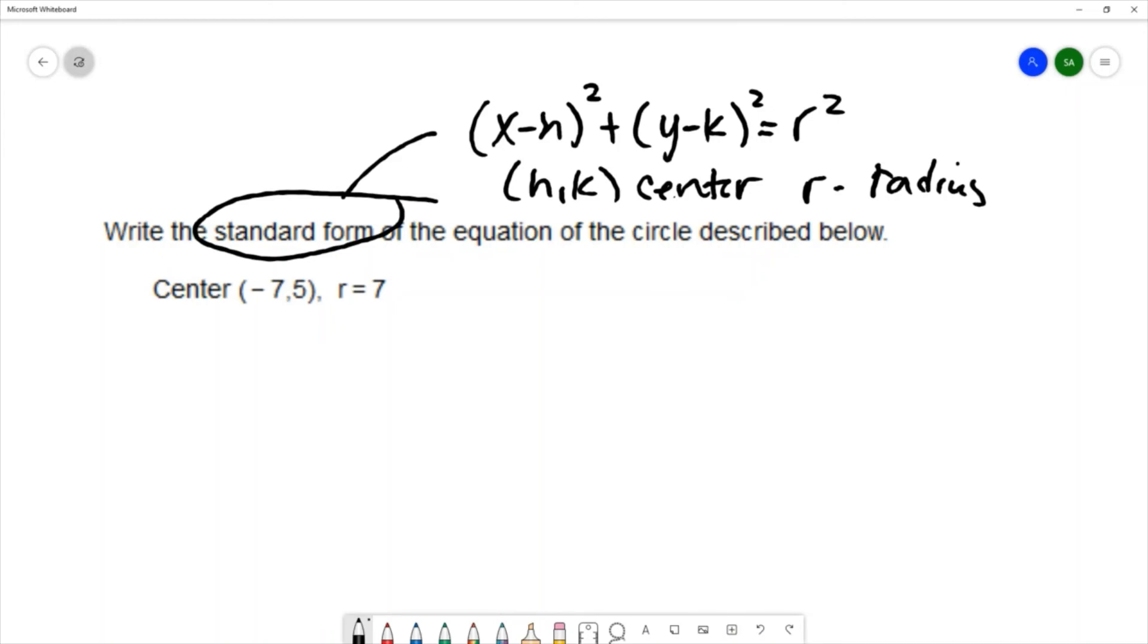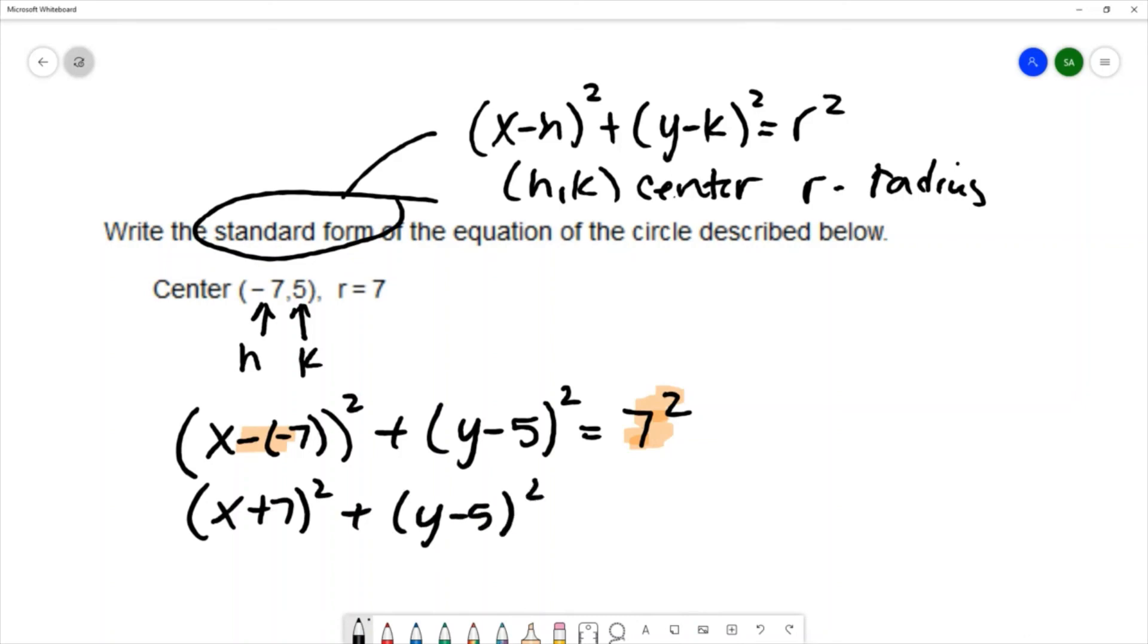So for ours, we have h being negative 7, and k being 5, and we have the value of r being 7. I'm going to substitute these values into the equation of the standard form of a circle. So that would give me x minus negative 7 squared plus y minus 5 squared equals 7 squared. I'll do a little bit of simplifying. I don't want to leave this double negative, and I don't want to leave this squared here. So I'll write this as x plus 7 squared plus y minus 5 squared equals 49.